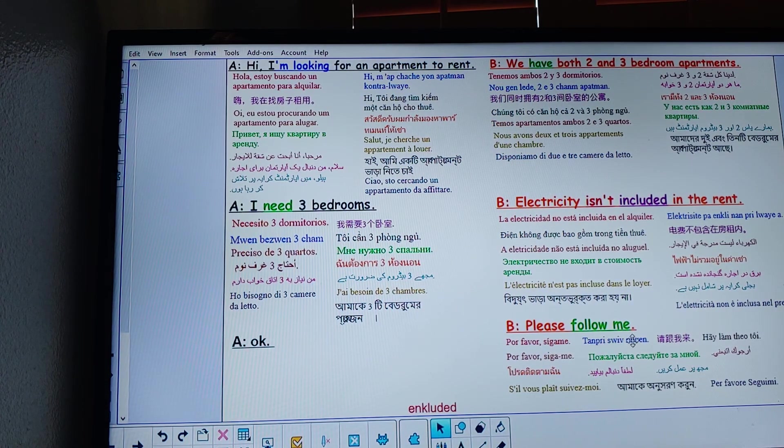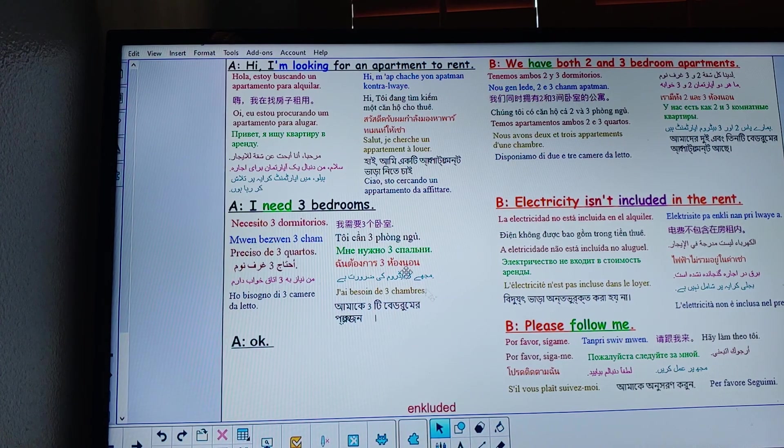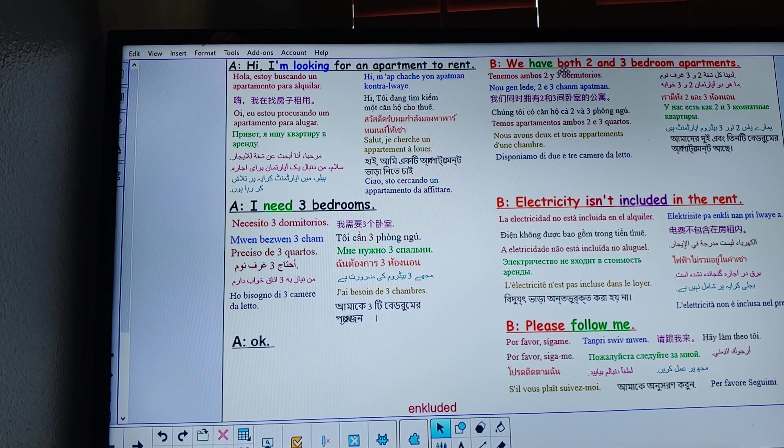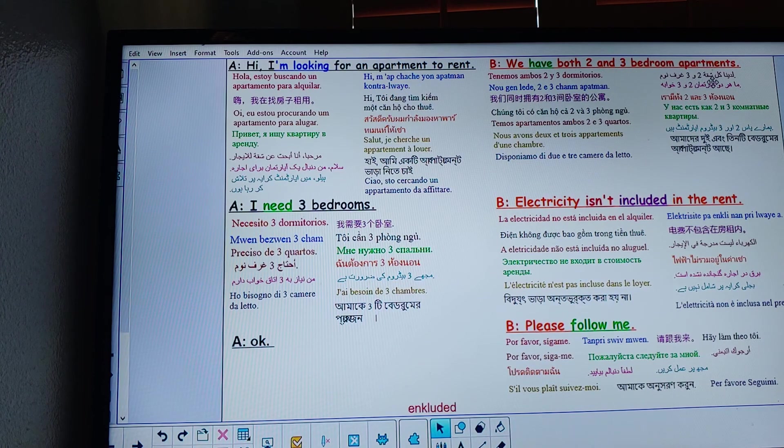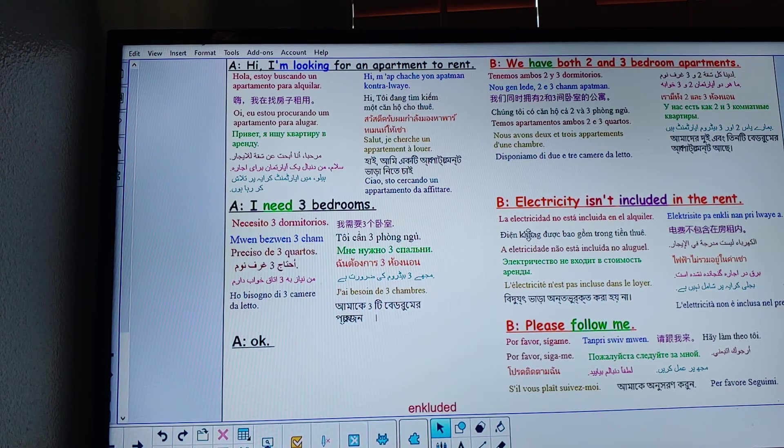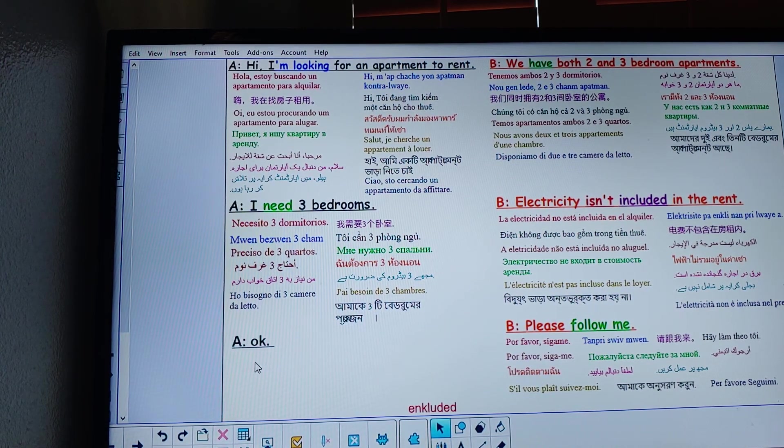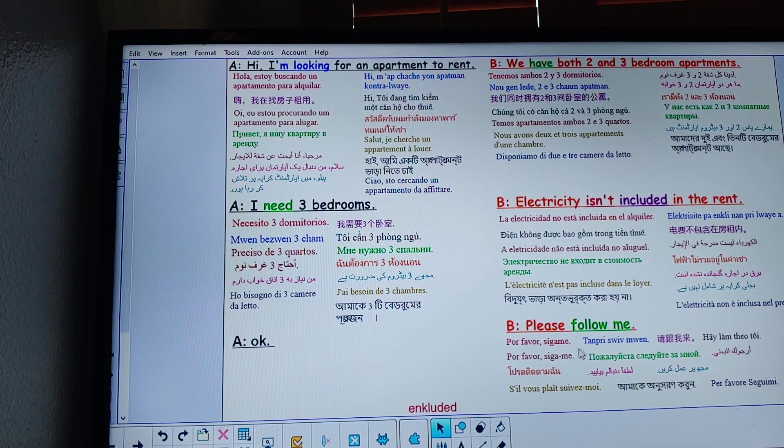Please follow me. Let's go a little bit faster. Hi, I'm looking for an apartment to rent. We have both two and three bedroom apartments. I need three bedrooms. Electricity isn't included in the rent. Okay. Please follow me.